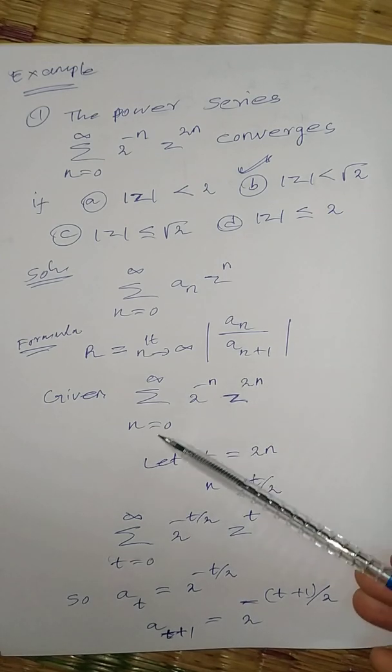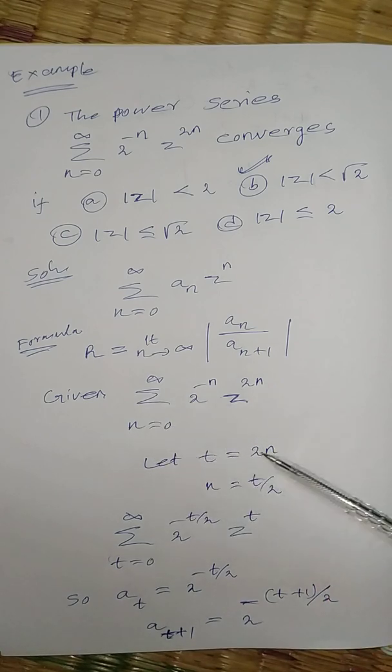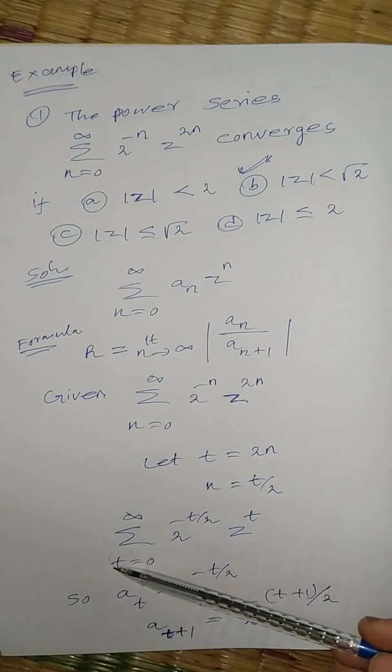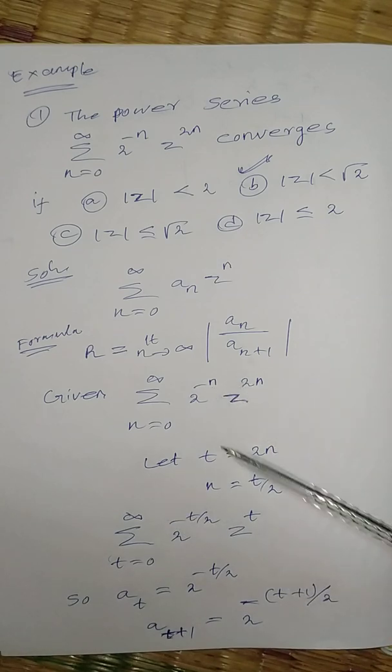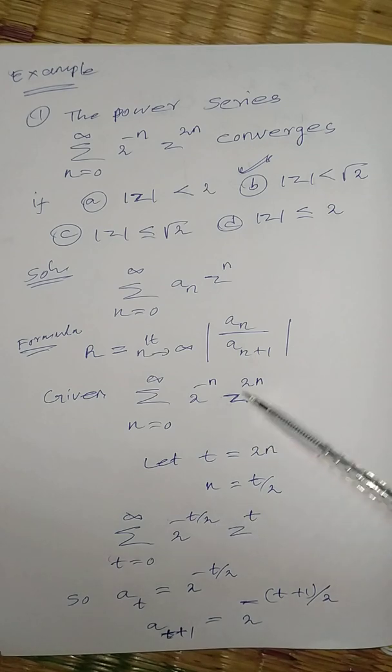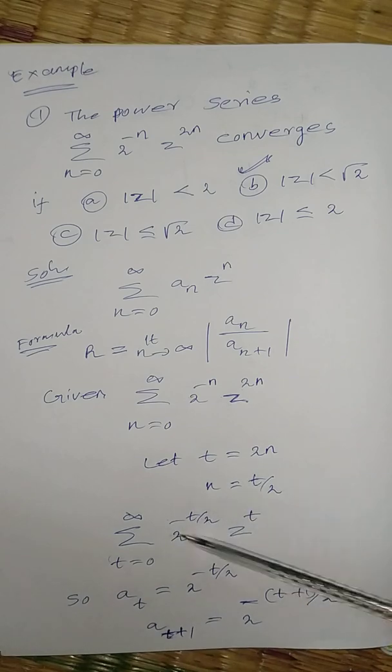Now the series becomes, now here n varies from, instead of n, use the temporal variable t. So t equal to 0 to infinity. 2 power n replacement, 2 power minus t by 2, z power 2n replacement t. Now it is a well pattern, the well-known pattern.